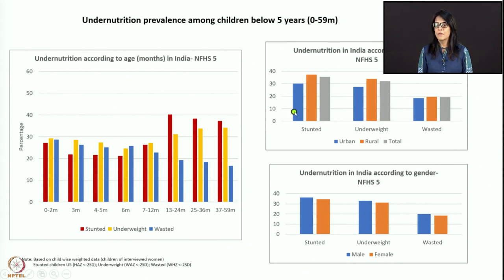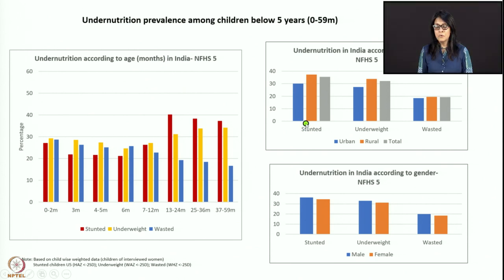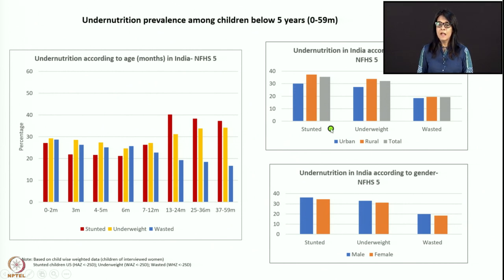This is undernutrition in India according to residence — urban or rural. Stunting in rural areas is much higher than urban. Pretty much the same for underweight. Wasting shows not much difference — urban and rural areas have equal numbers of wasted children. Underweight and stunting are higher in rural areas because as a child is stunted, the child will be underweight since bones are small. As per gender, males are slightly higher in stunting and underweight; wasting shows only minor differences between genders.